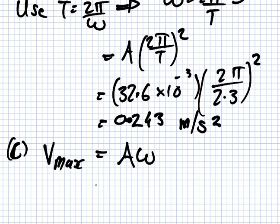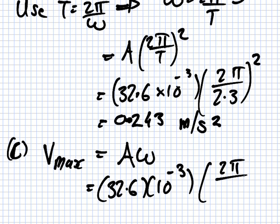So that one would be 32.6 × 10⁻³ × 2π/2.3.